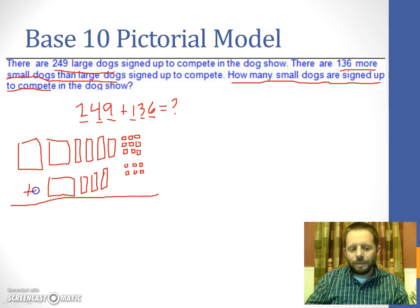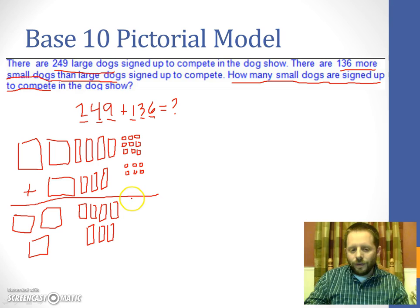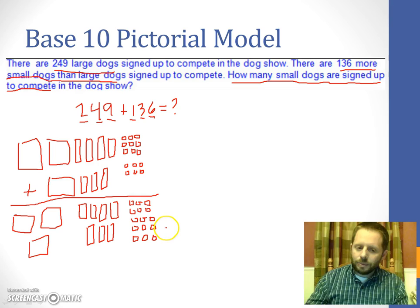So we have a total of three flats. We also now have a total of seven longs. And finally, we have a total of 15 of our little unit blocks.